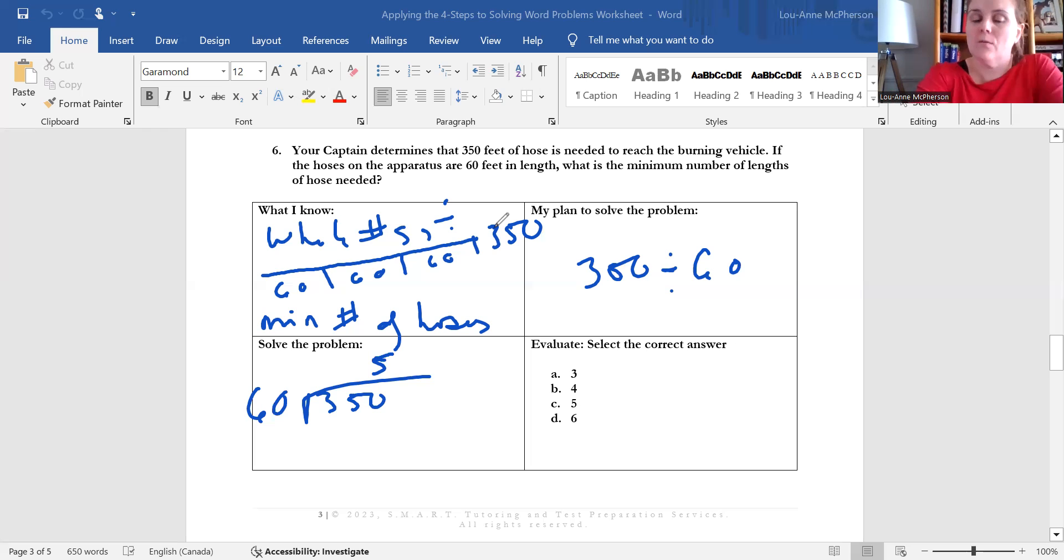All right, then once you've got it up there, you can go ahead and continue with the division steps. We're going to multiply 5 by 60. So 5 times 0 is 0. 5 times 6 is 30. 0 from 0 is 0. 0 from 5 is 5.